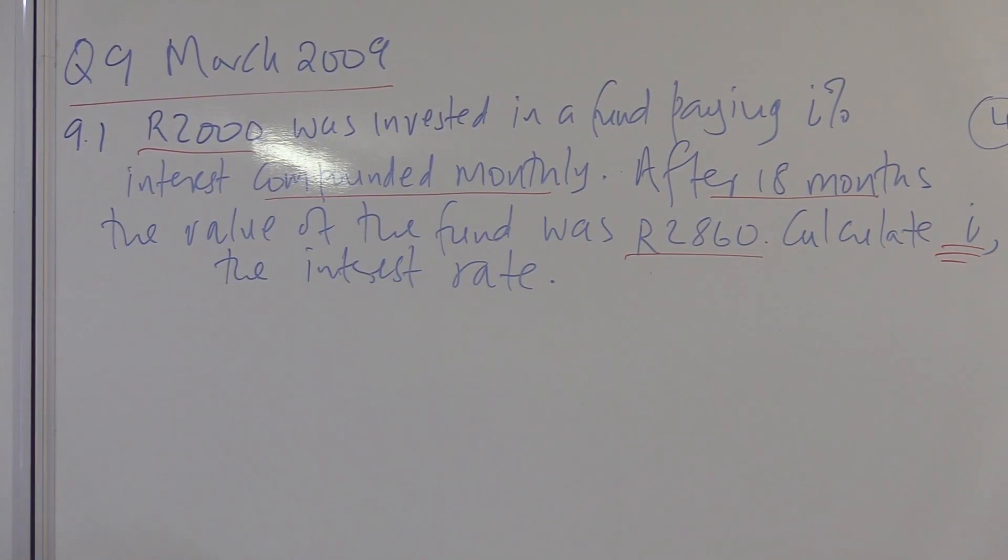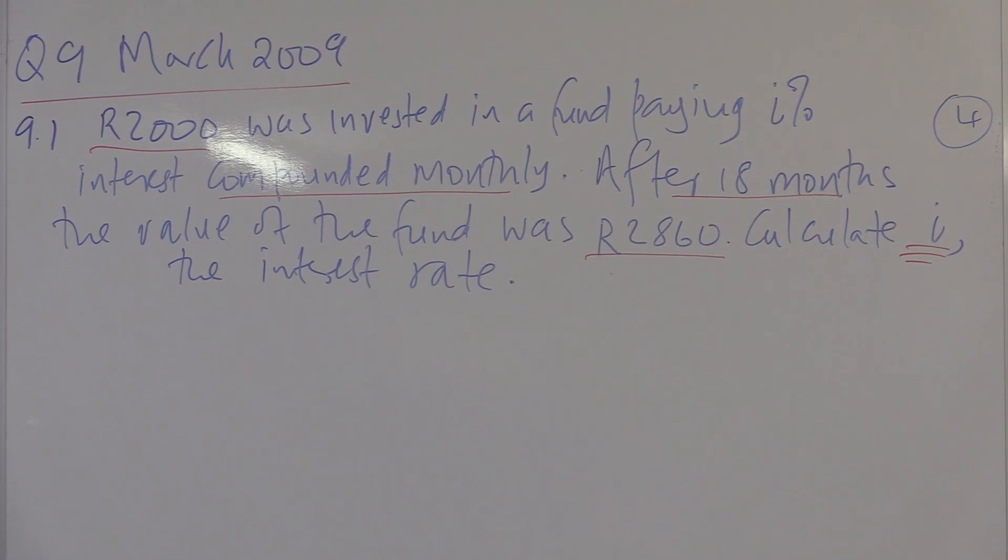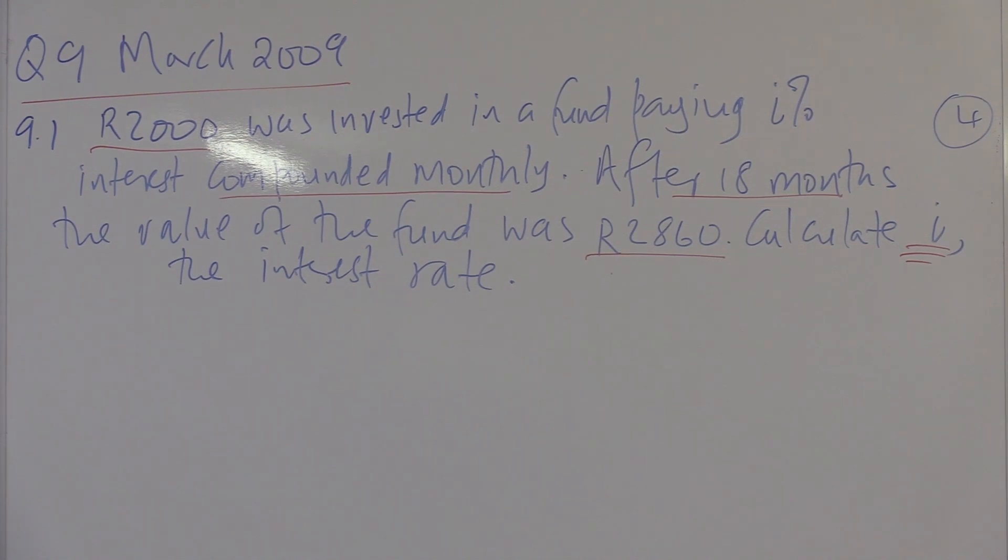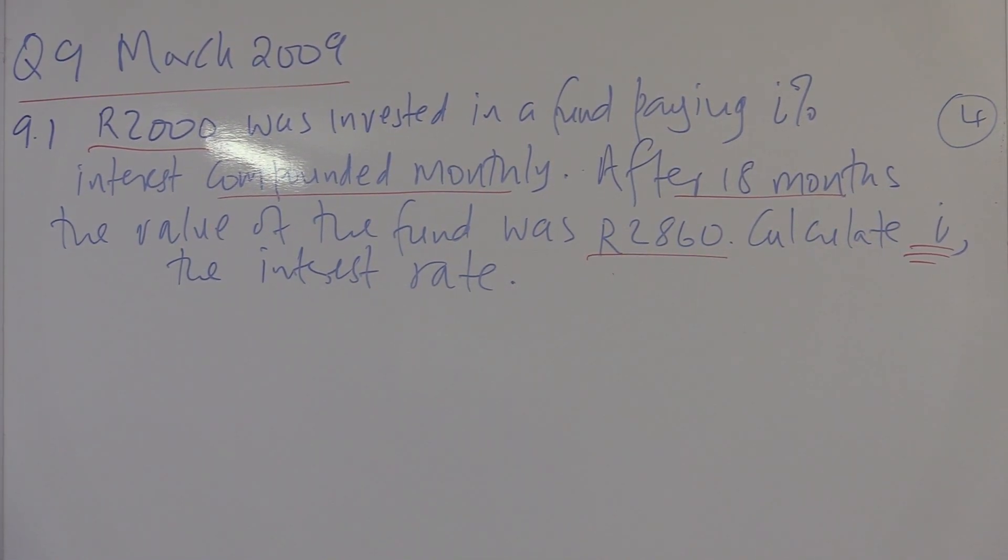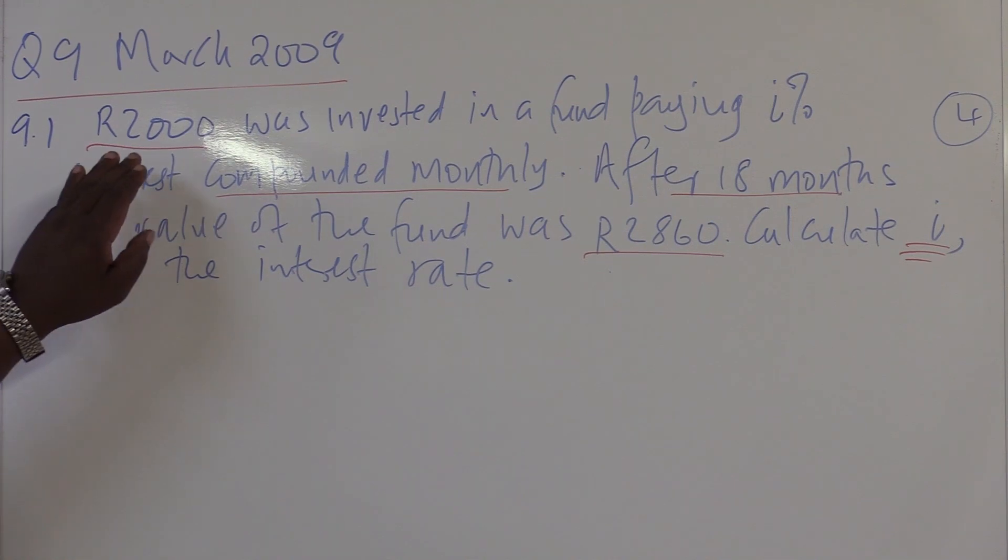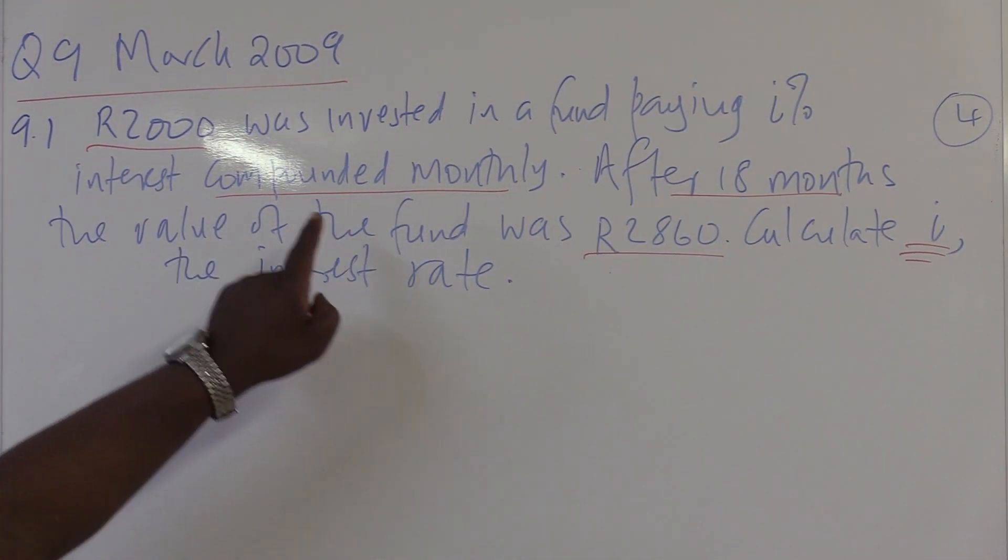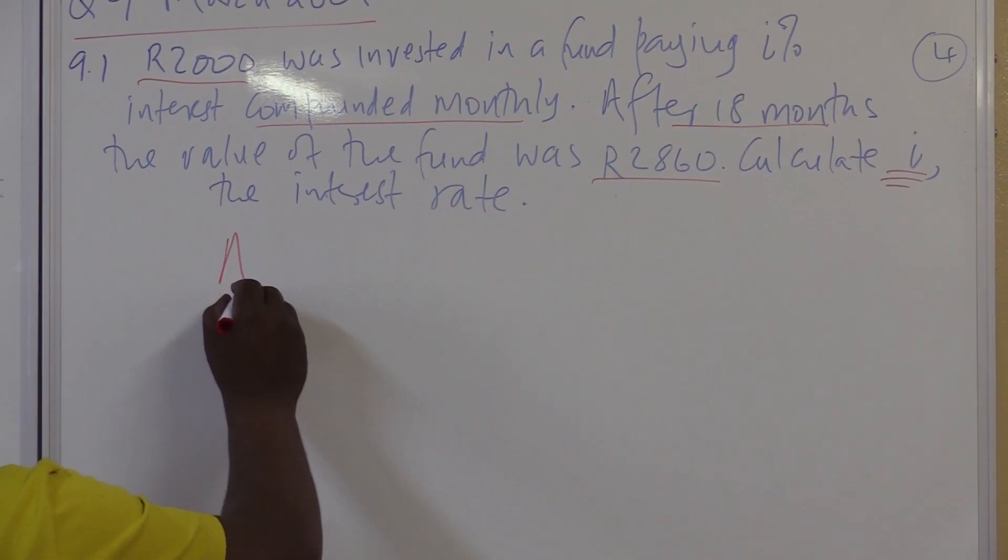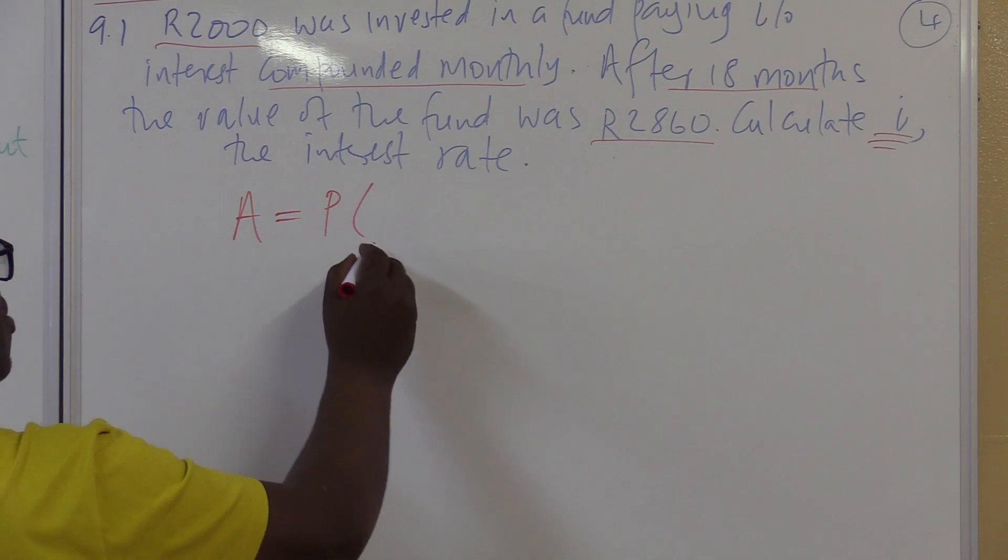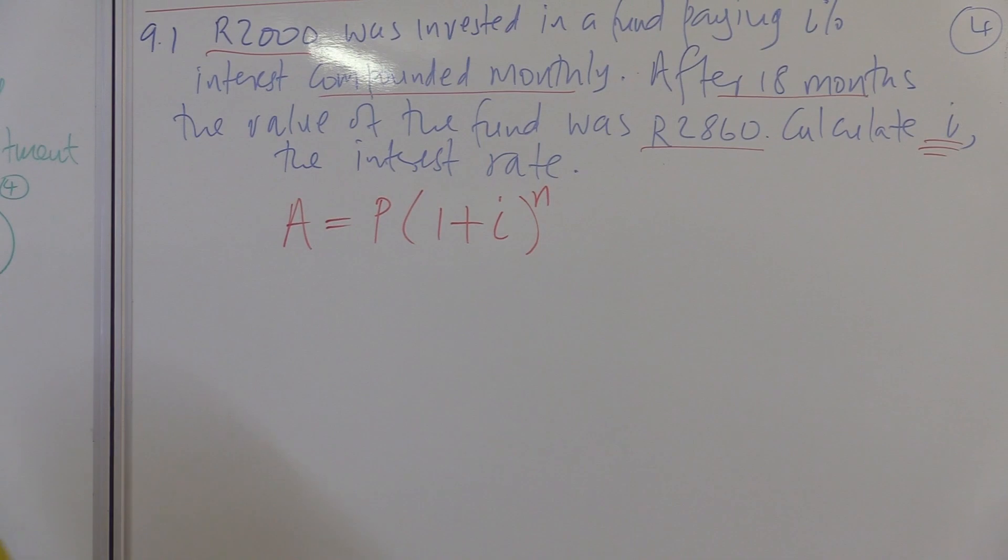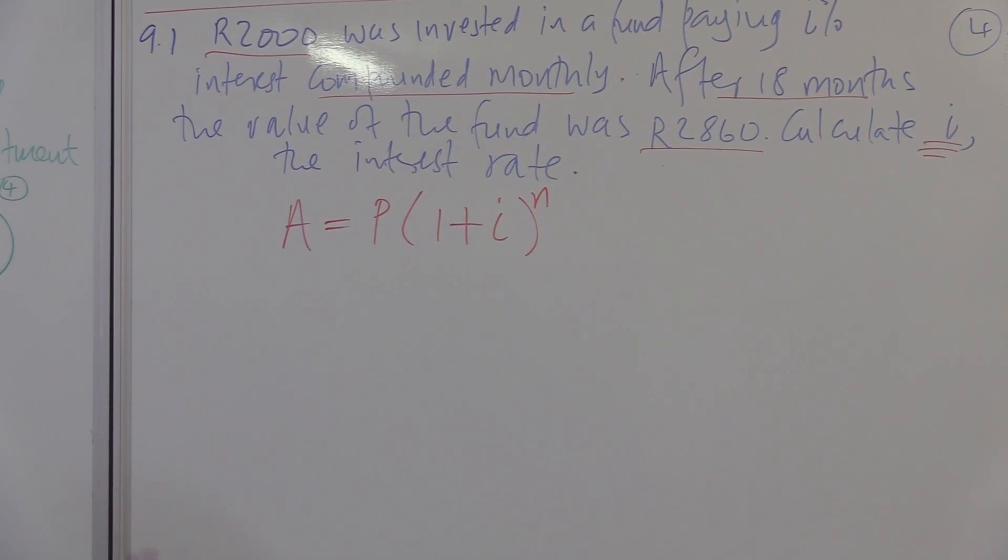This is what we're looking for, the interest rate. This is invested and it went up to this one and we're told it is compounded interest, so I know exactly which formula to use. It is A equals P into 1 plus I raised to the power N. Writing the correct formula gives you a mark, so don't lose on these marks.